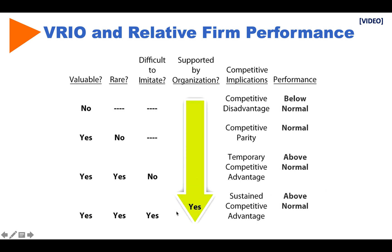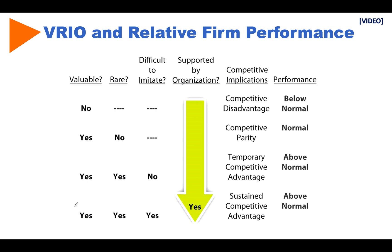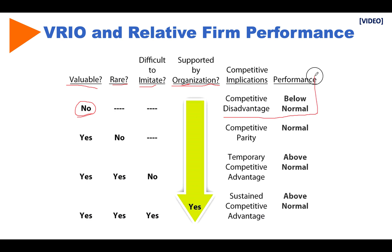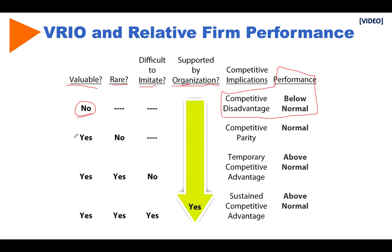So we have the four questions again: is it valuable? Is it rare? Is it hard to imitate? And are we organized in a way that allows us to exploit this resource? If your resource or capability doesn't even have any value, you have a competitive disadvantage and your performance will be below normal — there's no point to having this resource or capability if we don't even get value from it.